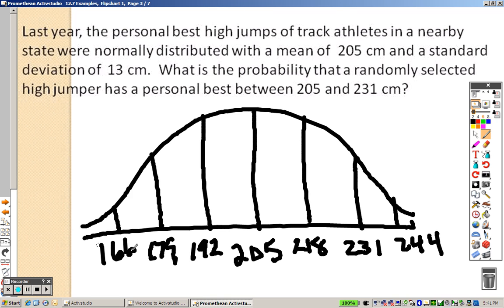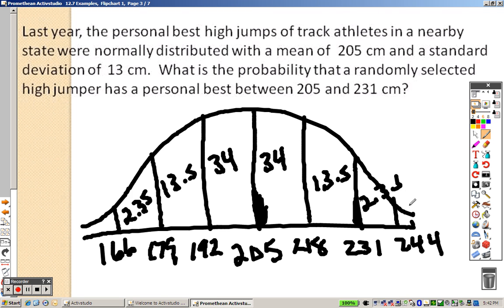Okay, so what's the probability that the randomly selected high jump has a personal score between 205, so between here, so between this one, and this one? Well, you've got to remember your percents. Remember your percents, this is 34%, this is 34%, this is 13.5, this is 13.5, this is 2.35, that means this is 2.35, this is 0.15, and 0.15.